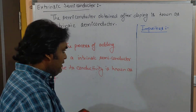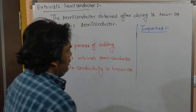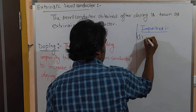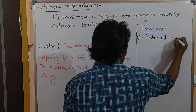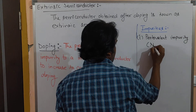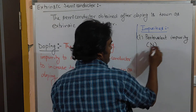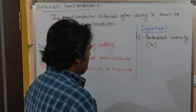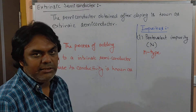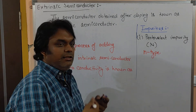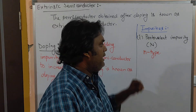Depending on these impurities, extrinsic semiconductors are classified. The first type uses a pentavalent impurity — a nitrogen atom is added as the impurity. Such kind of extrinsic semiconductor obtained is known as an N-type semiconductor.